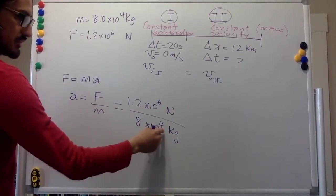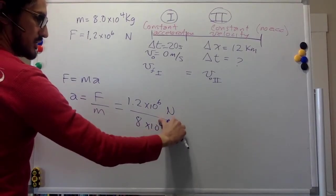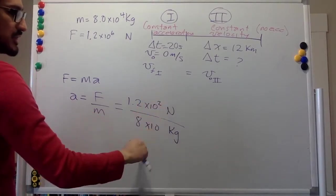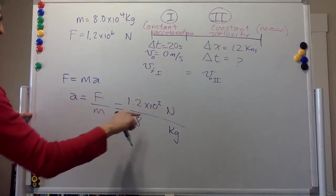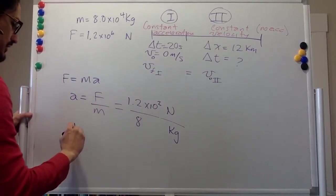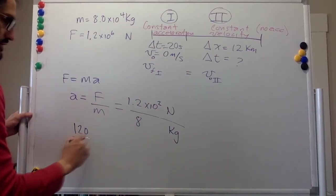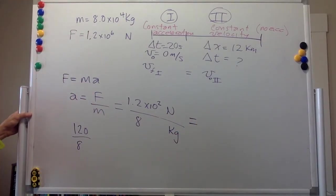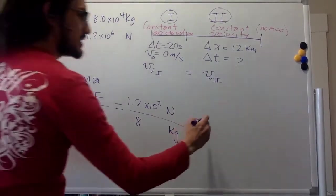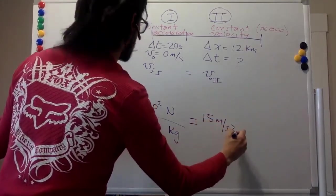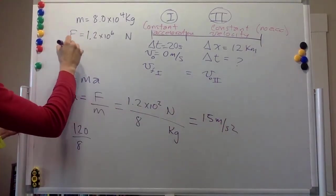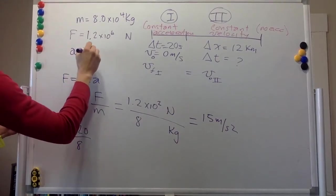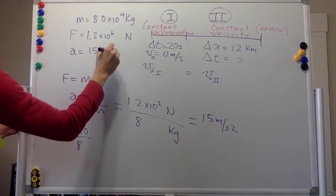So we can get rid of this 4, and this will become a 2. So 6 minus 4, and this is just 120 divided by 8. That's equal to 15 meters per second squared. So if this is the mass, this is the force, then the acceleration is 15 meters per second squared.